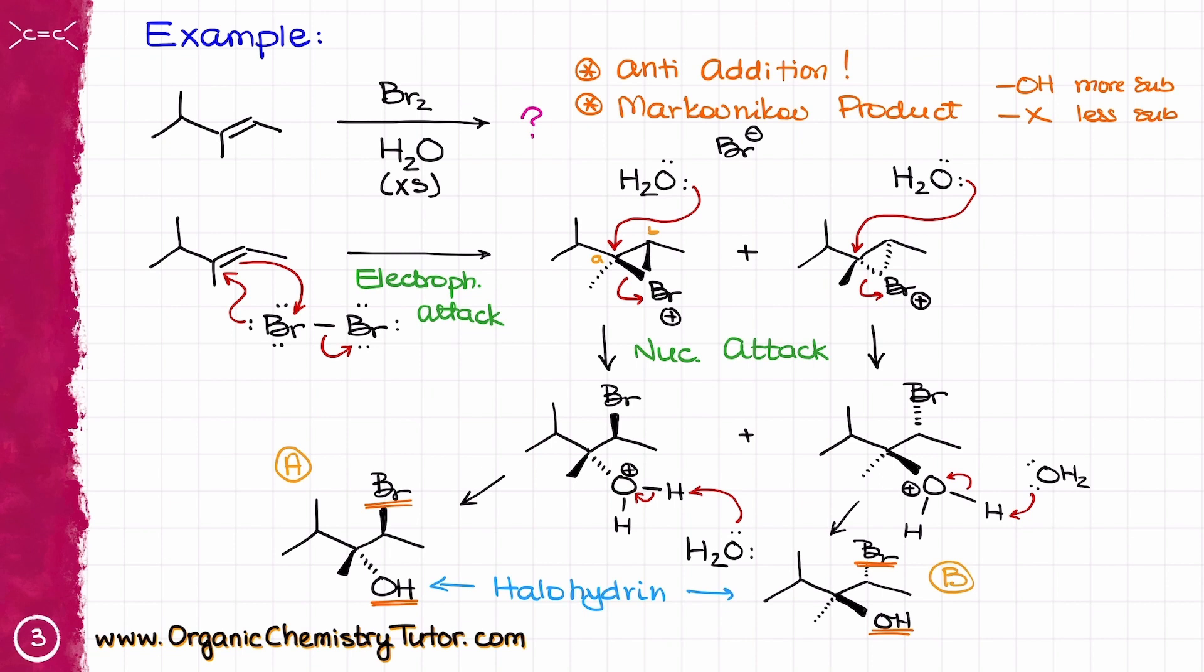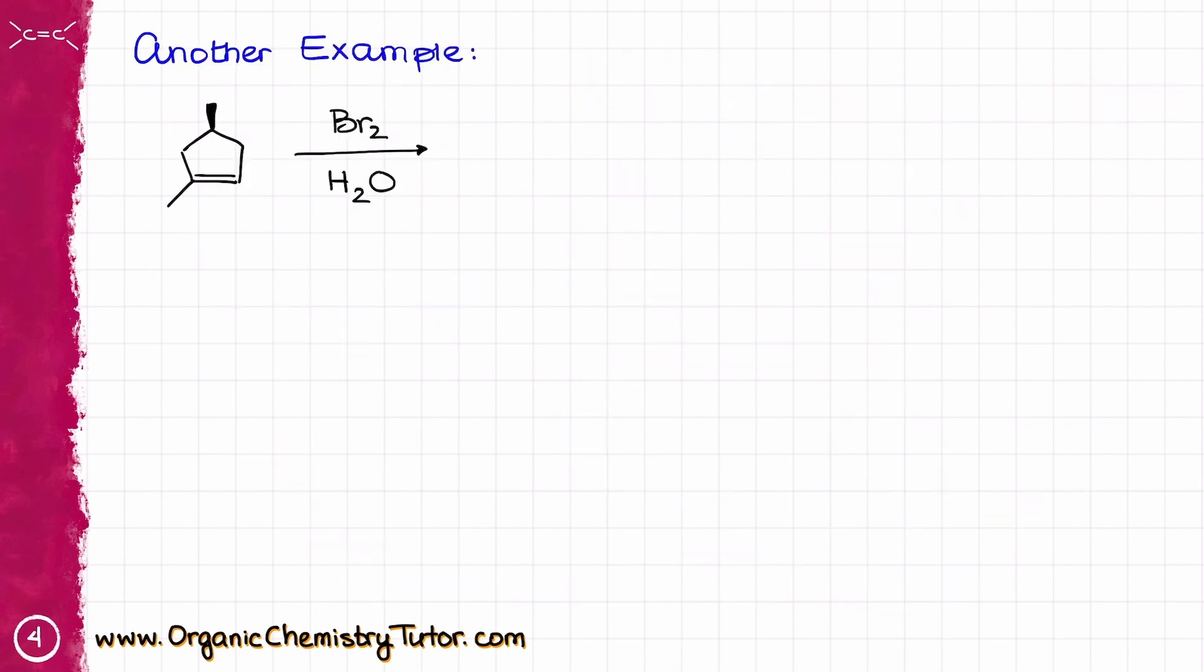And of course, just like halogenation doesn't always give you a pair of enantiomers, oxyhalogenation can give you enantiomers or diastereomers as well. So, for instance, if I react this cyclic alkene with my bromine in the presence of water, then what I'm going to end up with is going to be a pair of diastereomers. But don't just trust my word. Let's work through this problem together.